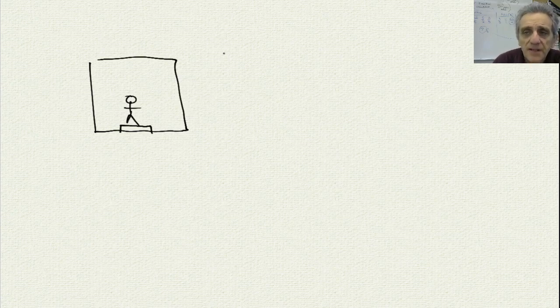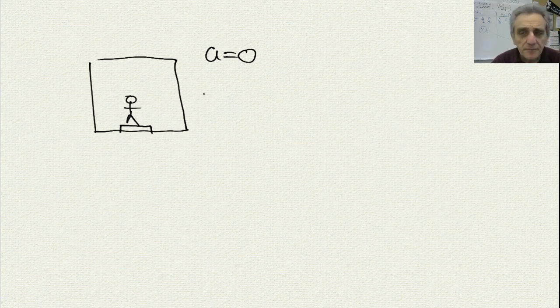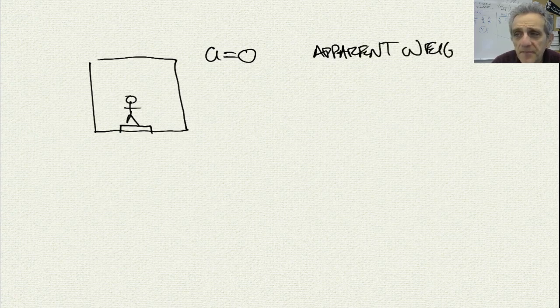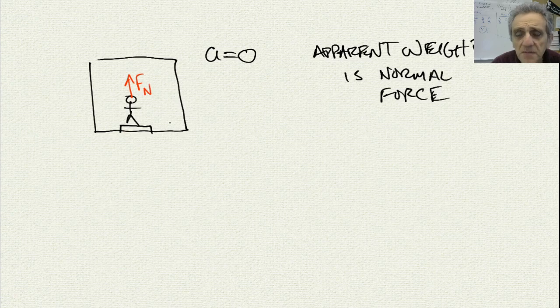When the elevator is not moving, the acceleration would be zero, so there is a normal force or an apparent weight. Apparent weight is normal force. If I use a different color to denote normal force here, there's going to be my normal force.